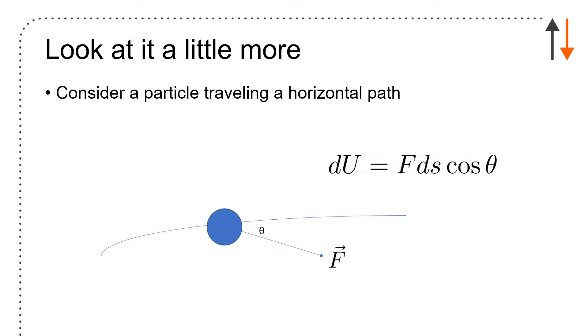Consider a particle that's traveling along a horizontal path. Work done is dU equals F, the force in this case, acting along the travel path, which is ds cos theta. So you can either be F cos theta or ds cos theta. But either way, one component of that has to be aligned with the other. For example, here you have force tangential and force normal. Tangential forces travel along the path, and N-T coordinates might be a nice system to use when looking at these problems.